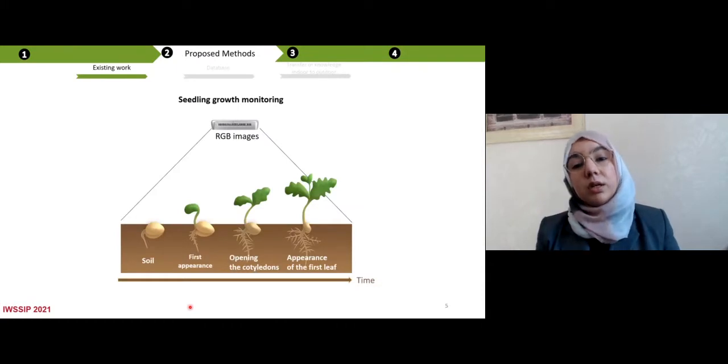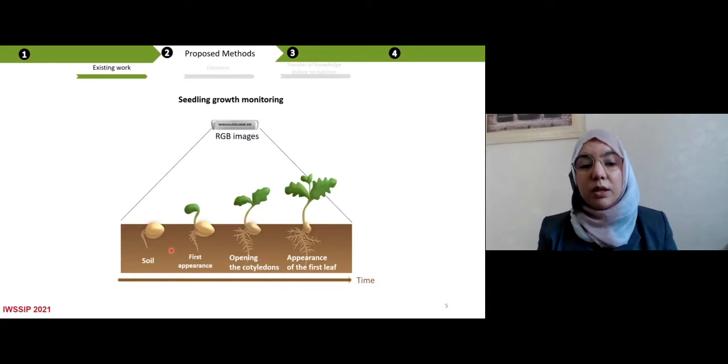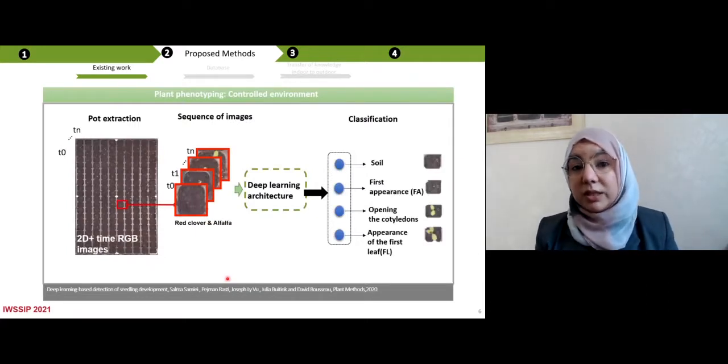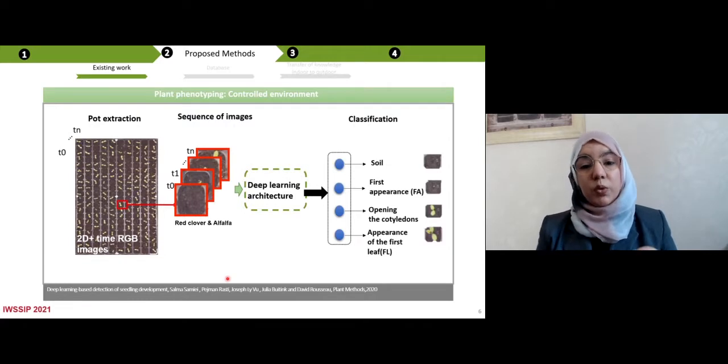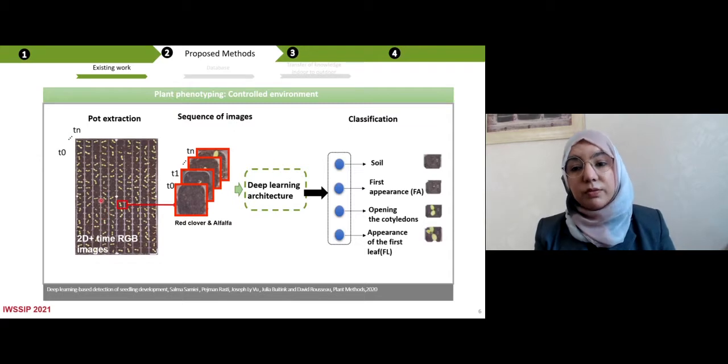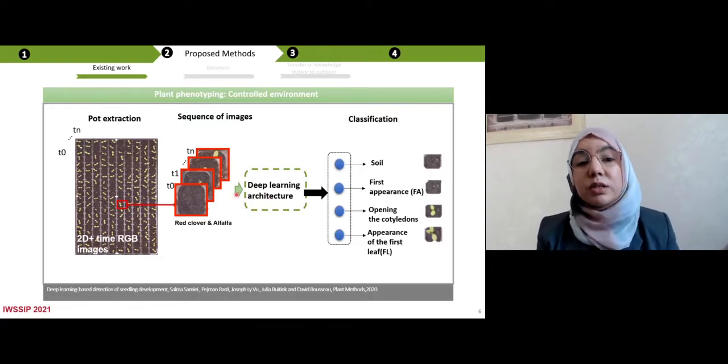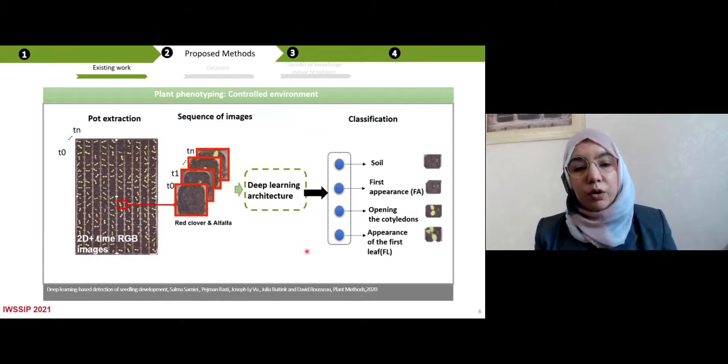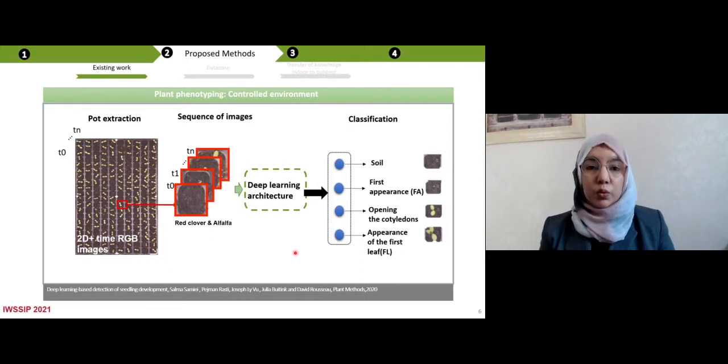In our team, we are focused on seedling growth monitoring in two different environments using RGB images to detect the four earliest state of development of Bi-Cotyledon plants. So the first one is the soil. The second one is the first appearance of plants. The third one is the opening of Cotyledon. And the last one is the appearance of the first leaf. So our recent work in control environment using deep learning was published in 2020. So here we have 2D anti-top view RGB images for several trees, and we feed to our deep learning architecture the sequence of images for each plant to detect the state of development. And now we want to move to working in outdoor.